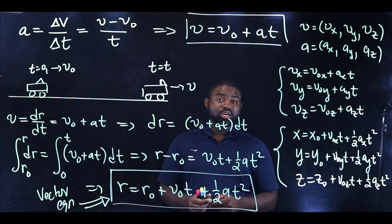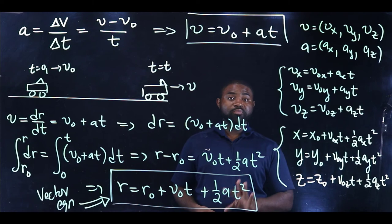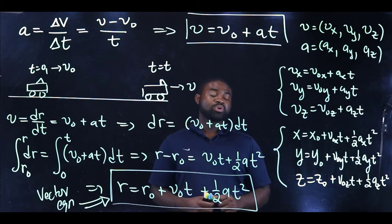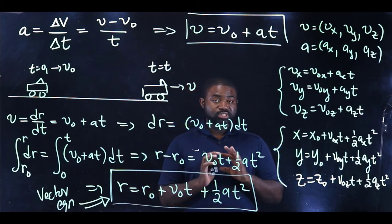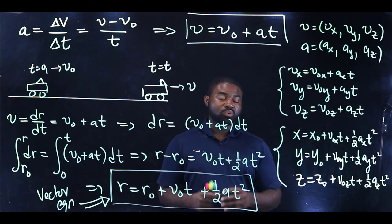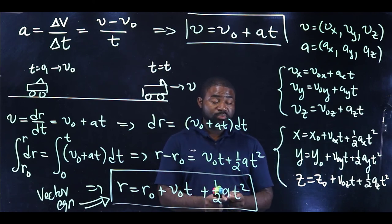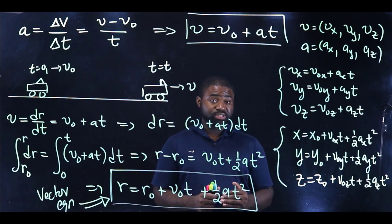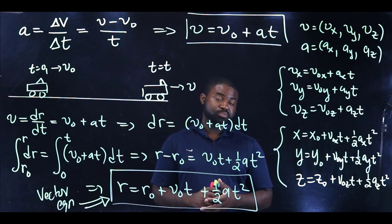When you are given a problem, as you will see in the series of examples we will do, we will treat the x motion separately, the y motion separately, and the z motion separately. This effectively reduces a three-dimensional problem into a one-dimensional problem, and that is the beauty of this procedure.